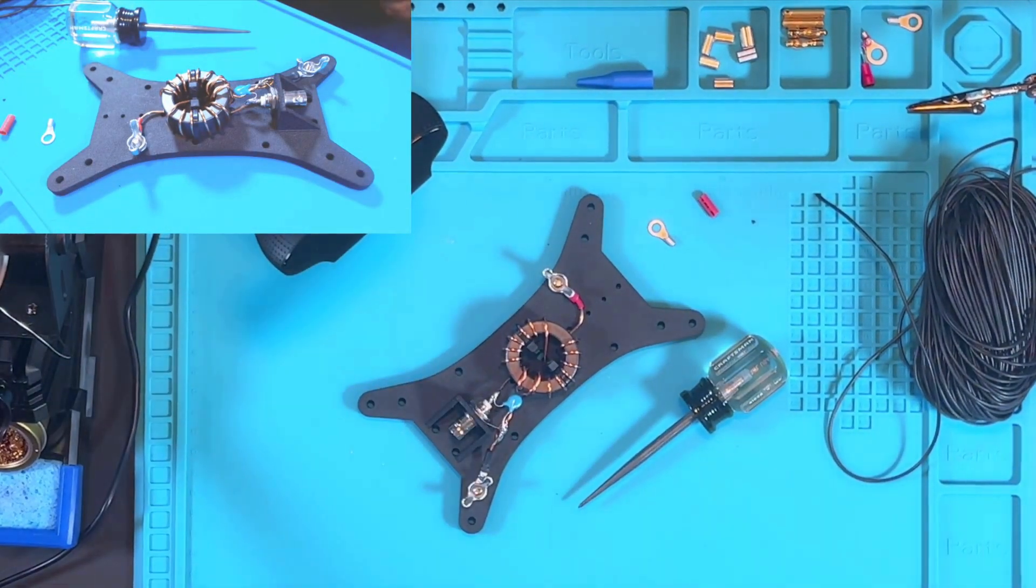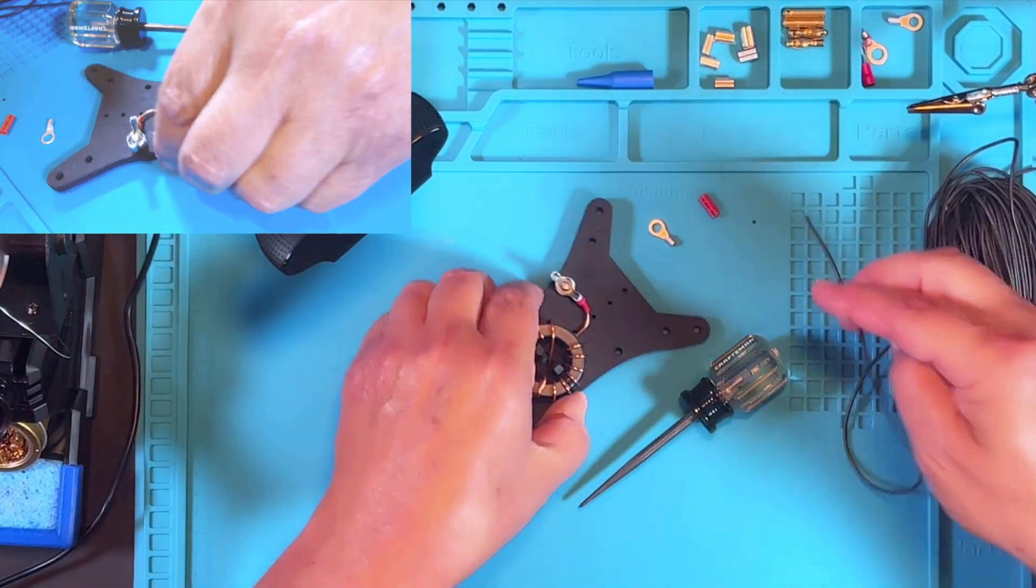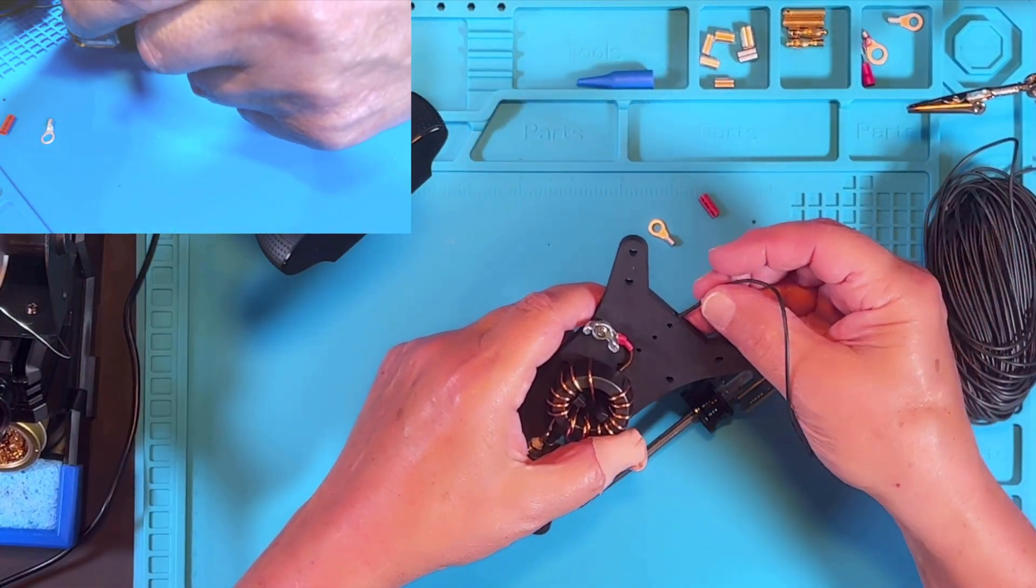Then we'll solder another ring terminal on, and then we're ready to take this out in the field, cut it to length, and tune her up.